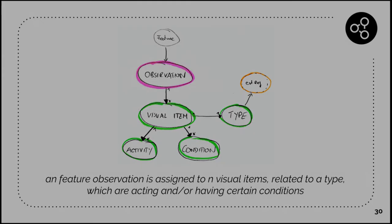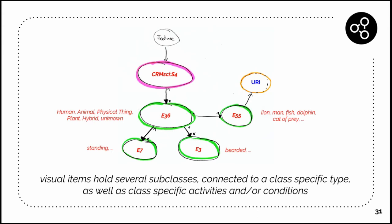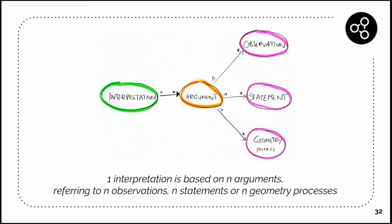A feature observation is assigned to visual items which are related to a type, and this can have acts or have different conditions in the end. For example, we have an observation and the visual item could be a human, an animal, or a physical thing. It could have a type like it's a visual item of an animal, and the type would be a lion. Then it can do something, or for example if it is a man, the man can do some action like he's standing, or some condition type like he has a beard, he's bearded in the end.